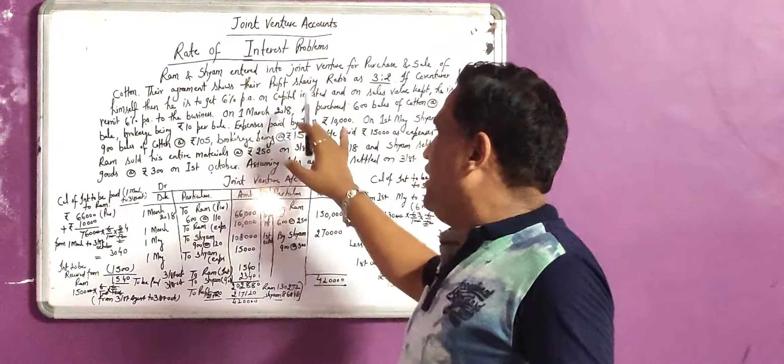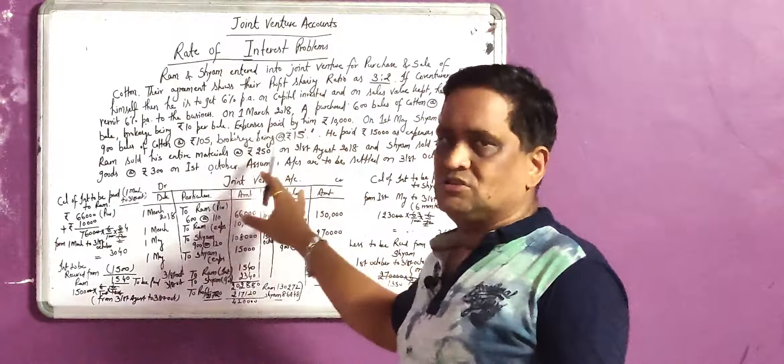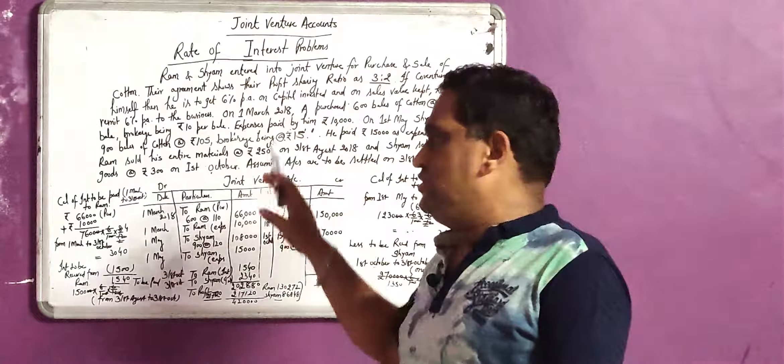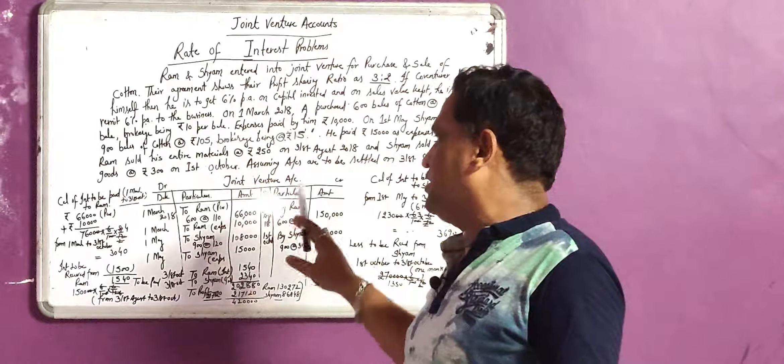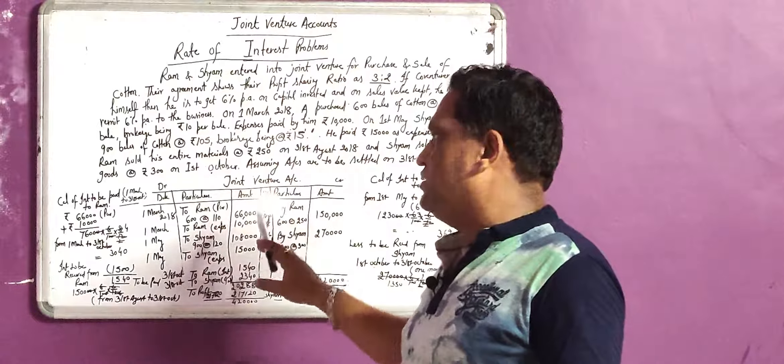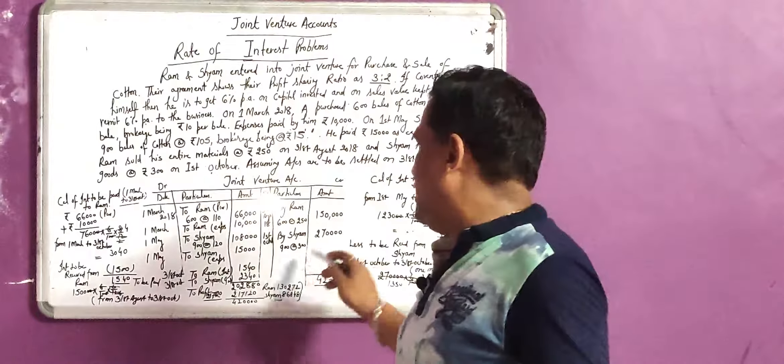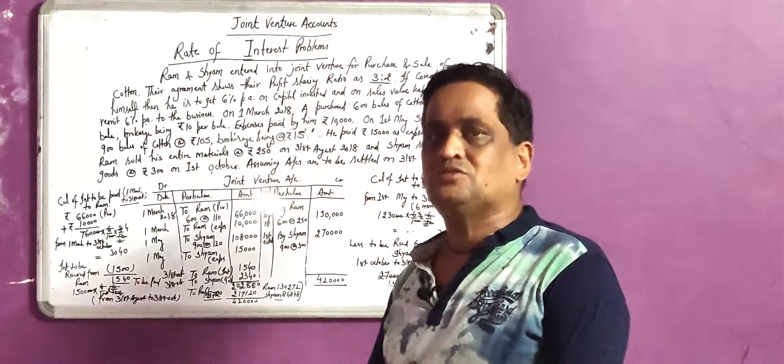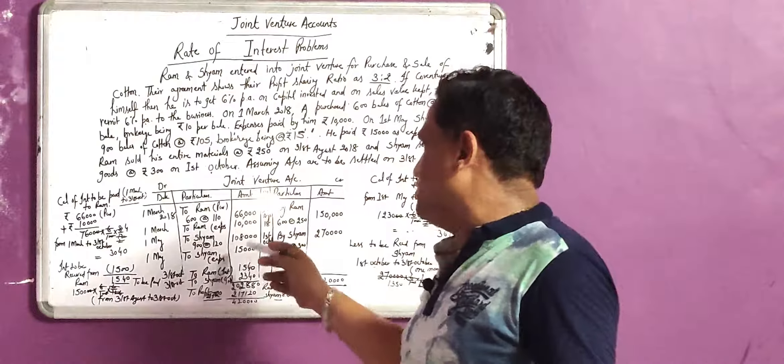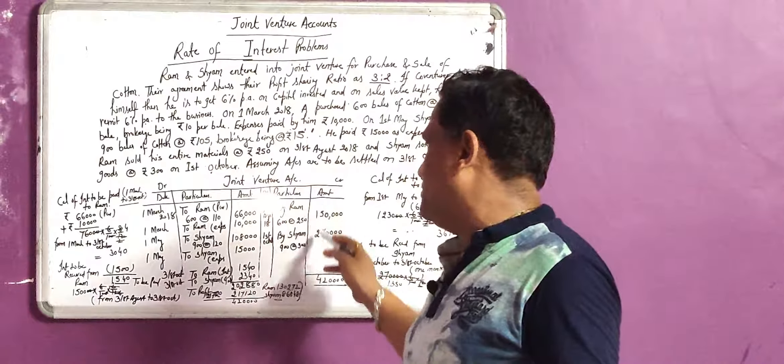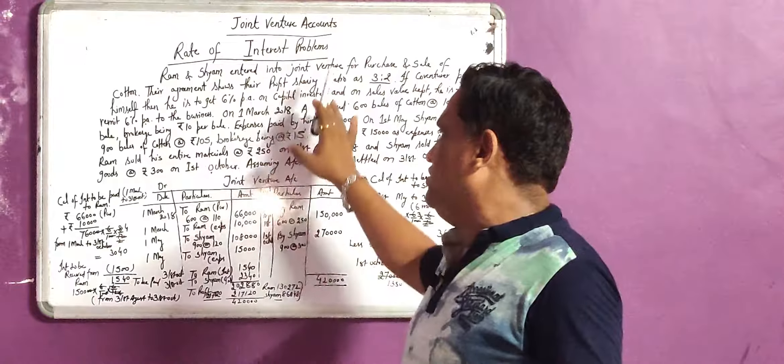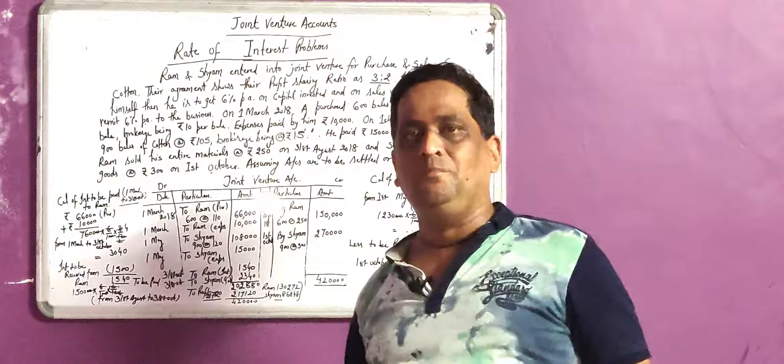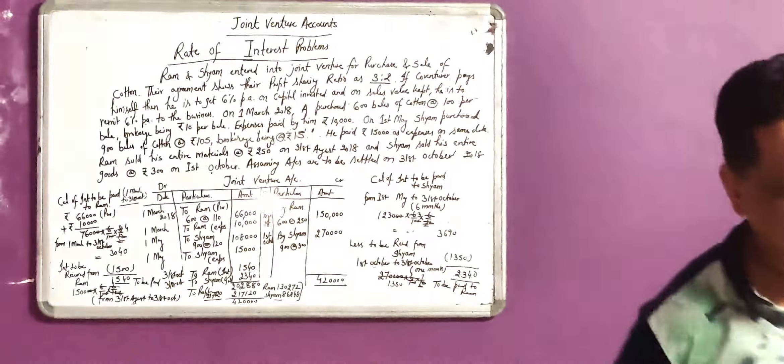In this way we have to calculate the interest payable to venturer or receivable by venturer. This is how we calculate the interest problem in joint venture. Whenever there are receivables, that will be on the credit side of joint venture. When these are payable by business to the co-venturer, then these should be debited as business expenditure. Receivables are business income. In this way we have to calculate rate of interest in the joint venture, which is a very important point in the examination. Thank you very much.